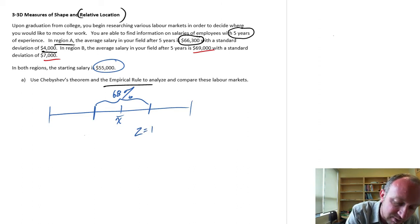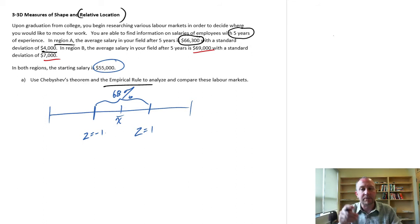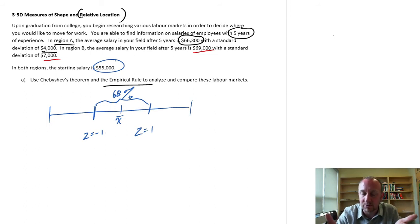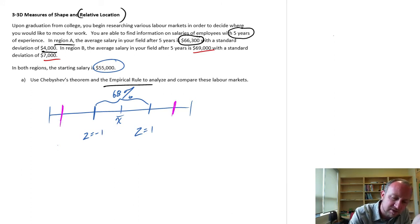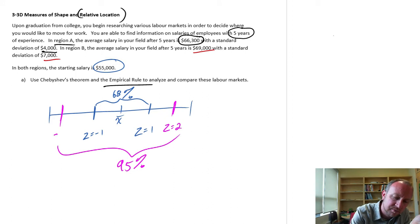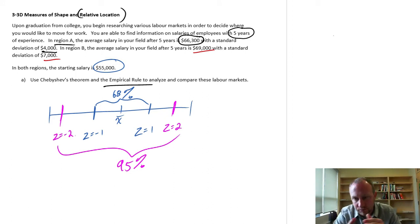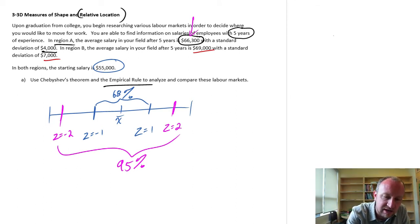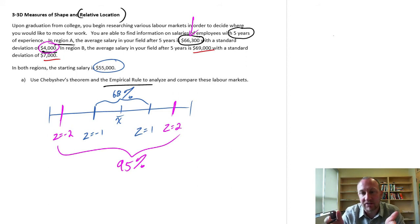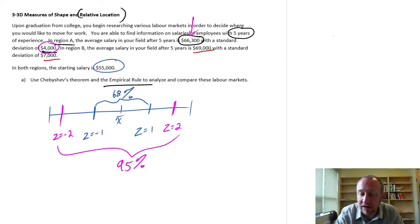That corresponds to a z-score of negative one and one — one standard deviation on either side of the mean. Sixty eight percent of observations would be there. Ninety five percent of the observations are within two standard deviations, so z equals two and z equals negative two. Now that we have information on our average and standard deviations, we can calculate what's the general range of salaries I might expect to earn after five years of experience.